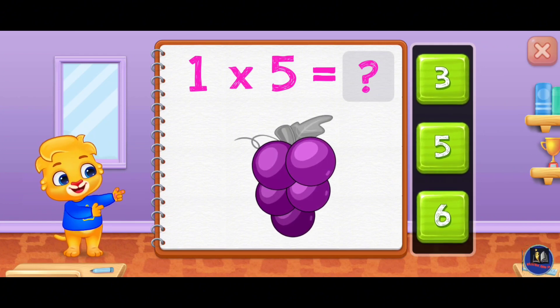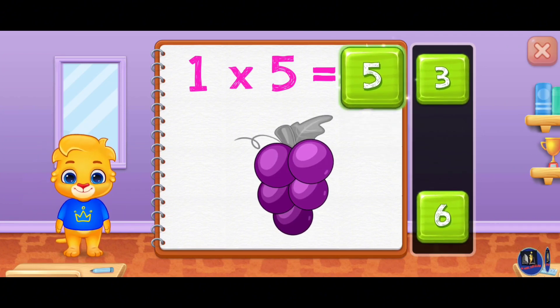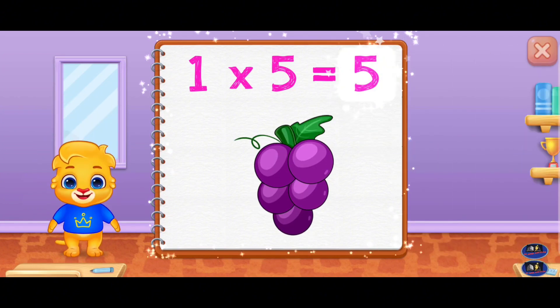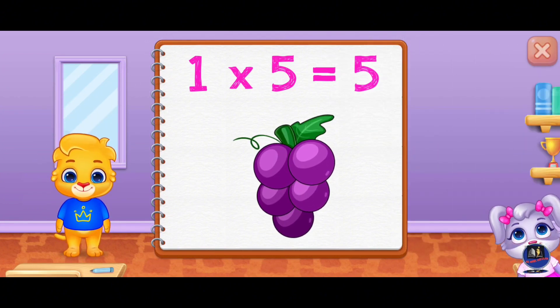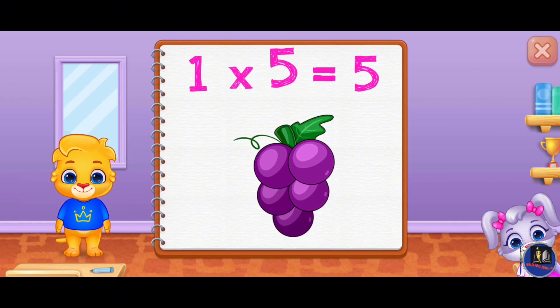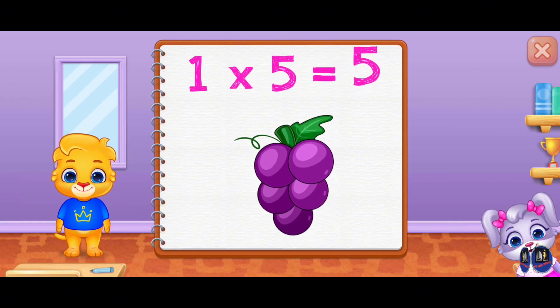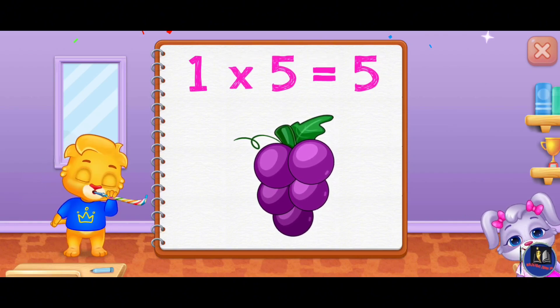Five, four, two, one. One times five equals five. One times five equals five.